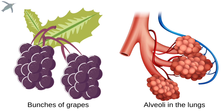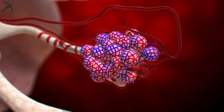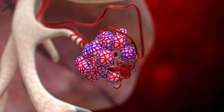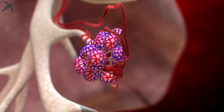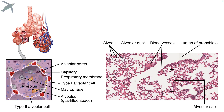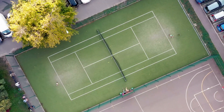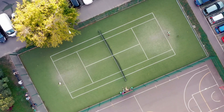The alveoli kind of look like bunches of grapes — each grape is filled with air, and the entire bunch is surrounded by a dense network of pulmonary capillaries. The theme here is huge surface area for gas exchange: millions of tiny little bubbles, and the total surface area of all of these alveoli would cover a tennis court.